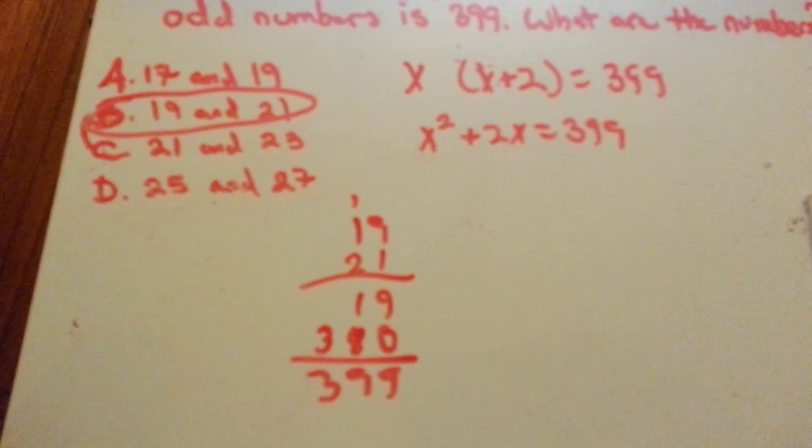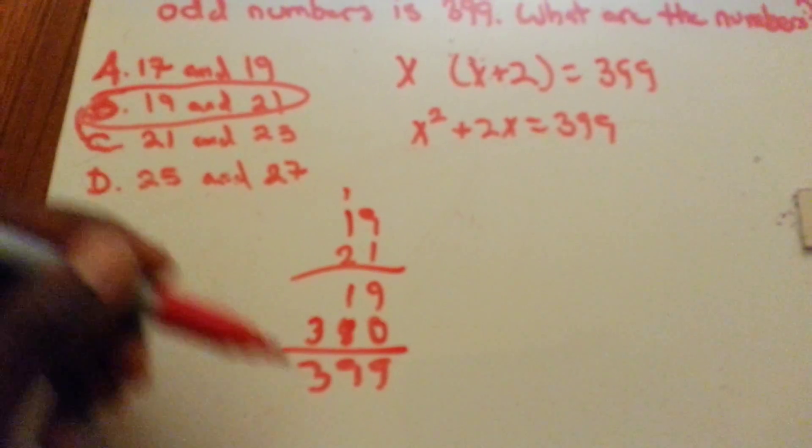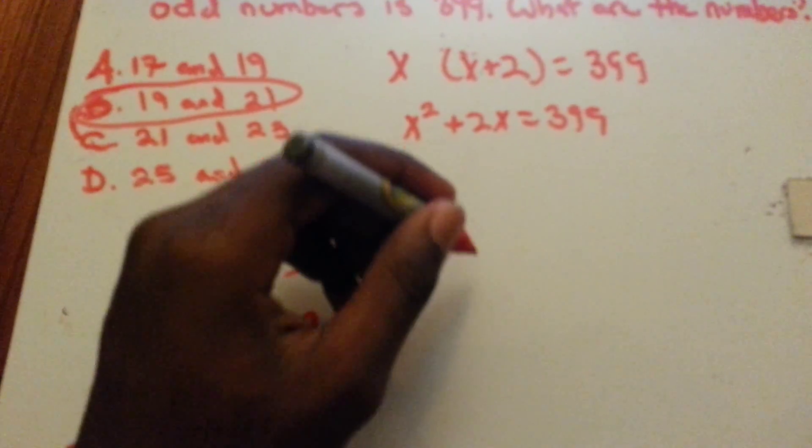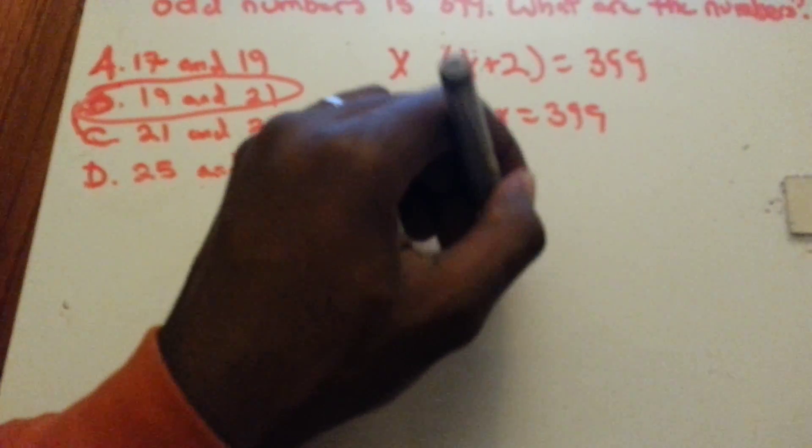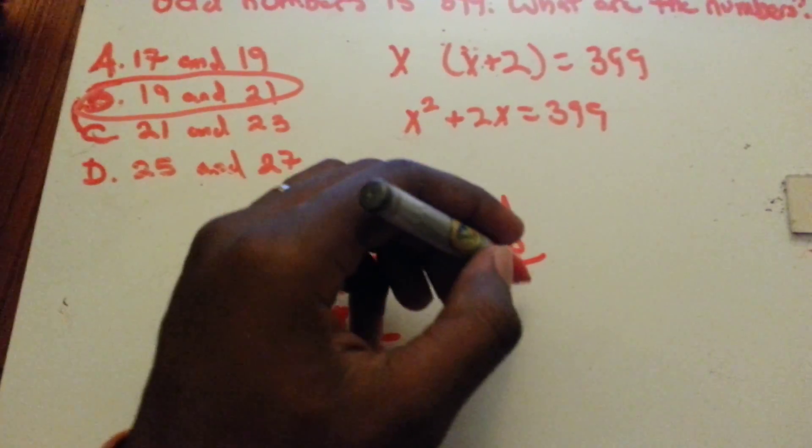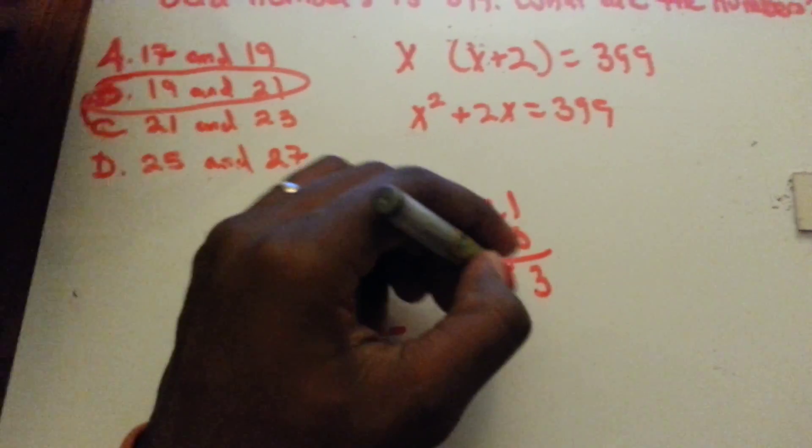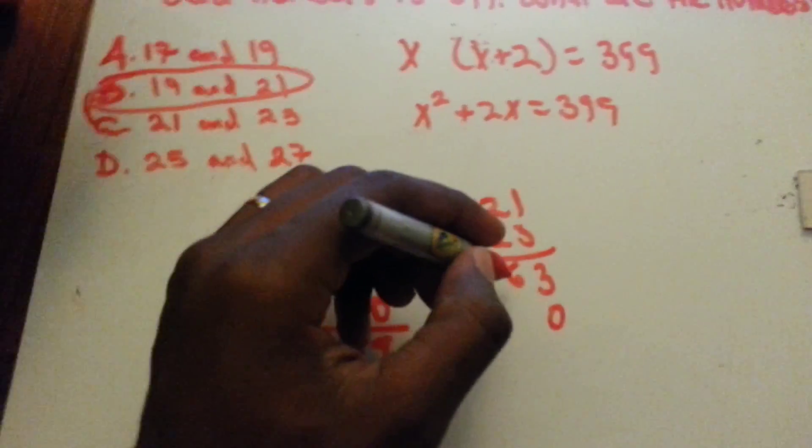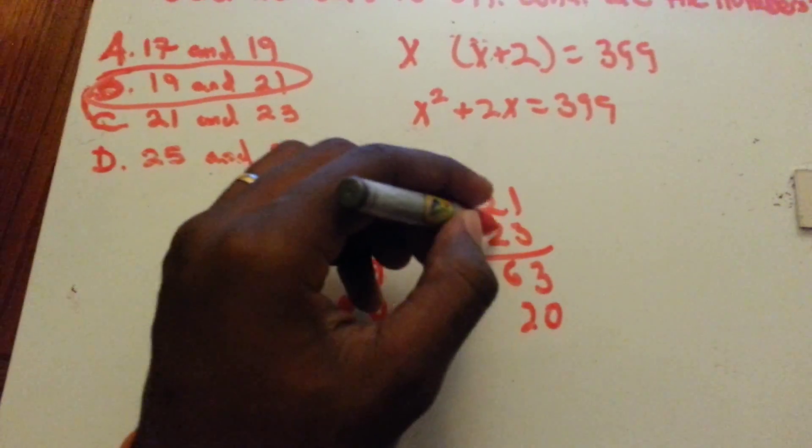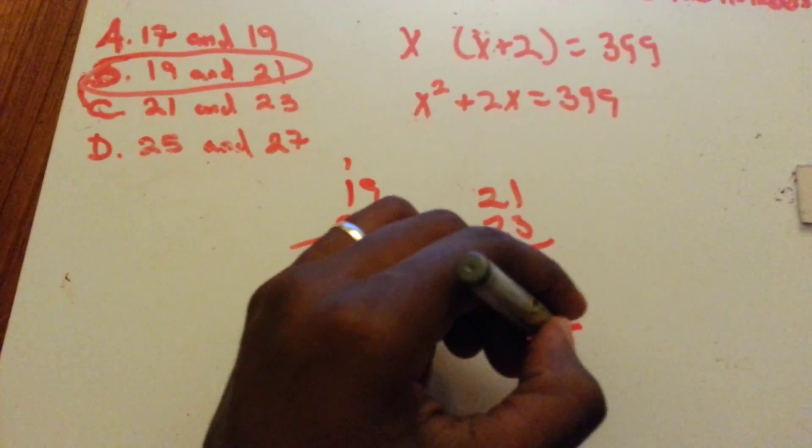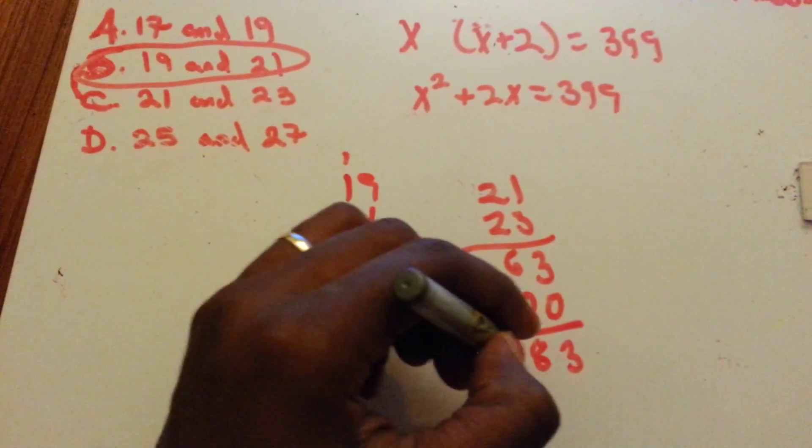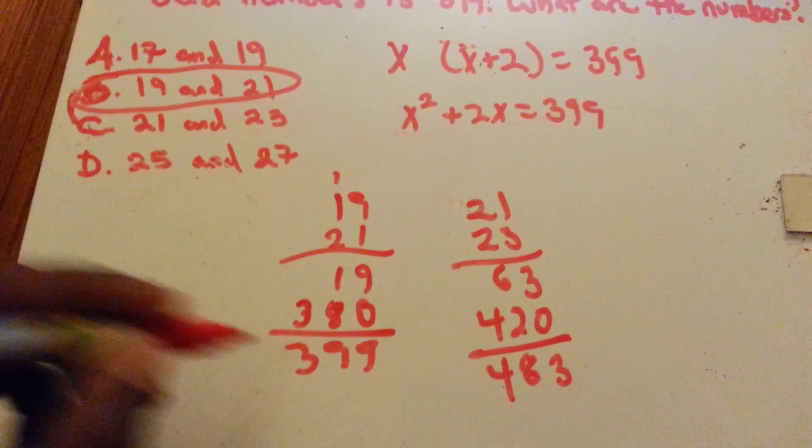To show that it doesn't work out for all of them, I'll just do the next one. If I would have started with 21 and 23: 3 times 1 is 3, 3 times 2 is 6, 0, 2 times 1 is 2, 2 times 2 is 4, gives 483. That's not the answer, obviously.